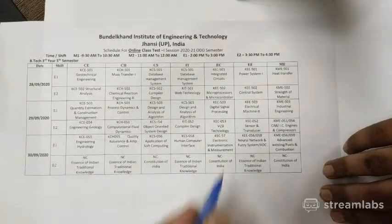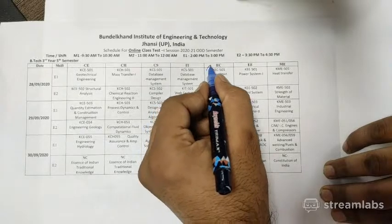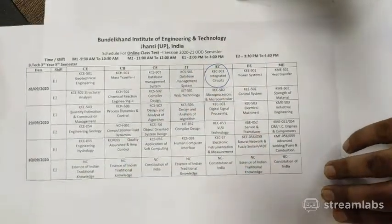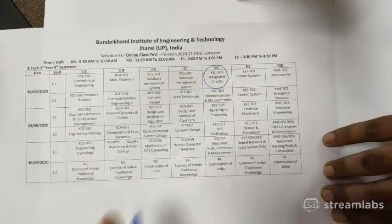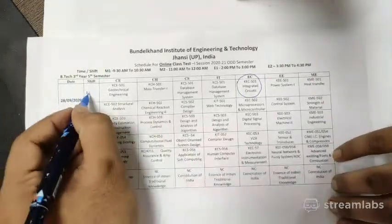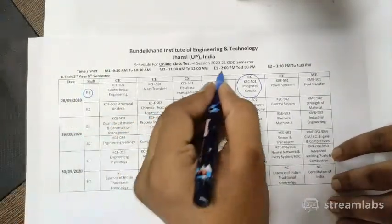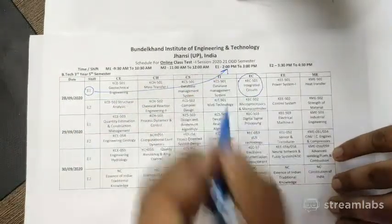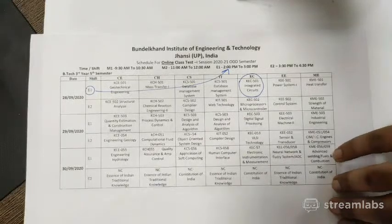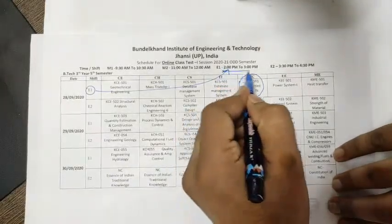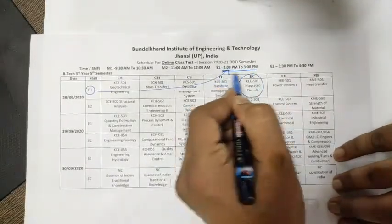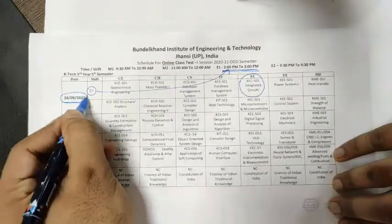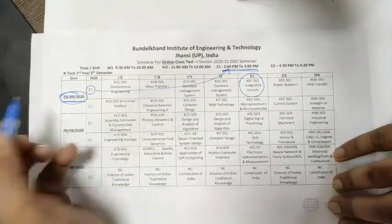You can see that the CT for Integrated Circuit is listed here. This CT is in time slot E1, and the time for E1 is 2 pm to 3 pm. Therefore, our paper will be from 2 pm to 3 pm on the date 28/09/2020.